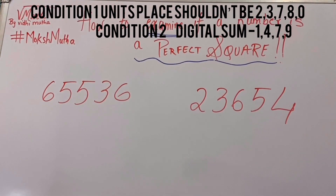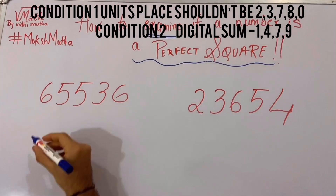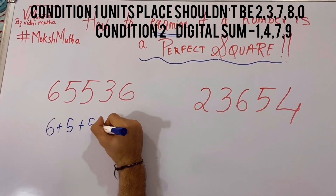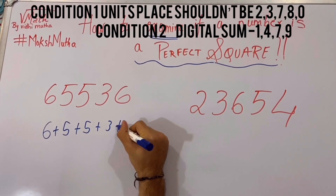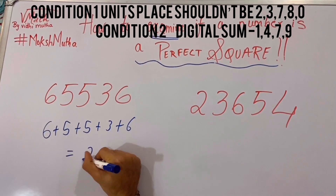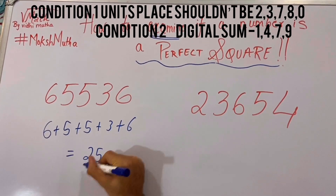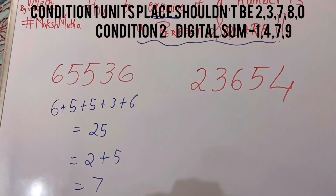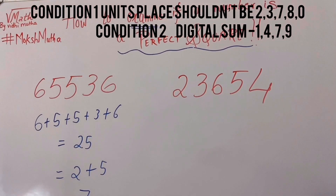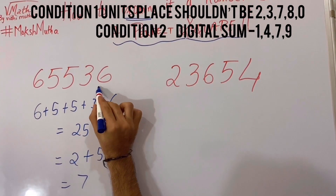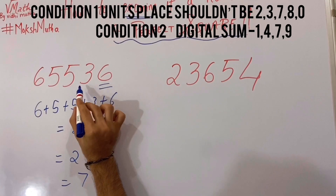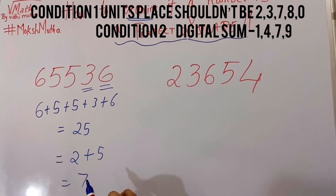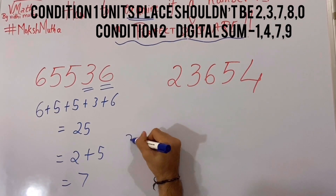Let's take the digital sum of 65536: 6 plus 5 plus 5 plus 3 plus 6, which is equal to 25. Again 2 plus 5 is equal to 7. So yes, the digital sum is 7. Also note that next to 6 there is an odd number. It means it is a perfect square number, and it is the square of 256.